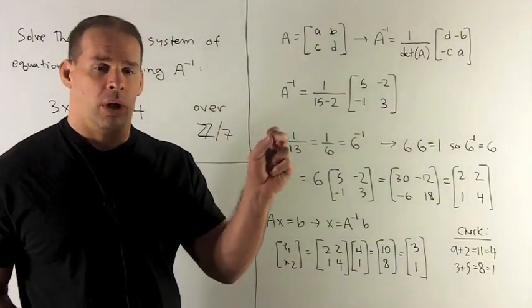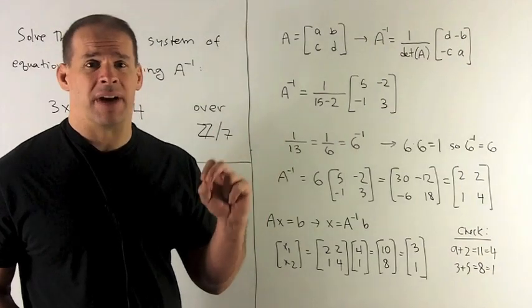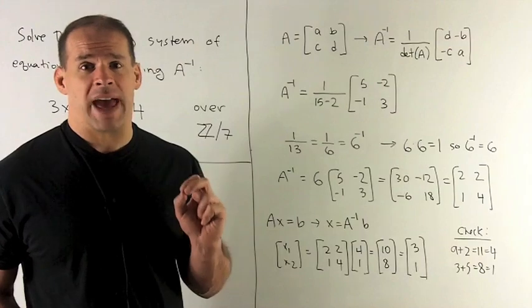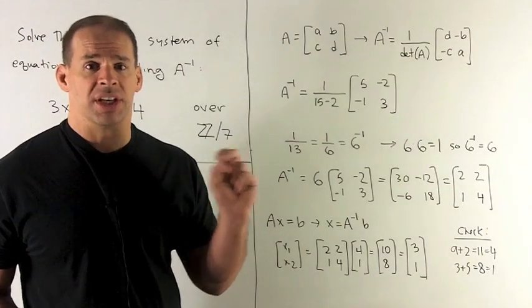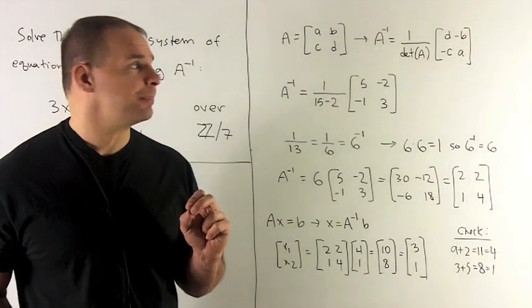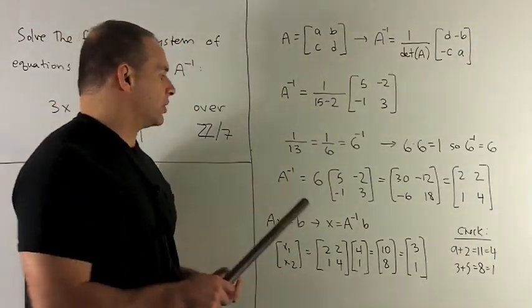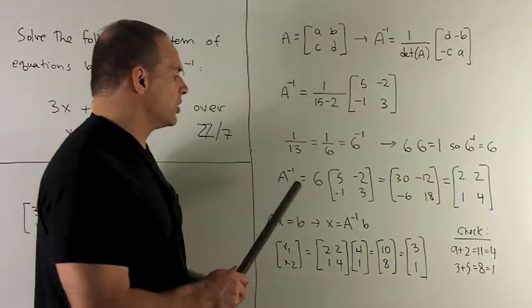If I run through 0 through 6, try to find that number times 6 that gives me 1, we'll see that the solution is going to be 6 itself. So 6 inverse equals 6. When I try to find A inverse now, that 1 over 13 turns into 6. And now I just push it through.